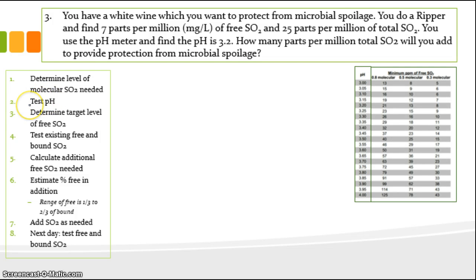First, step one, determine the level of molecular SO2 needed. So we want to protect from microbial spoilage, but it doesn't tell us if we want to protect from yeast or bacteria. So you have to make an assumption. So you're either going to take a number from column two of our chart or column three of our chart, depending on whether you want protection against yeast, which would be this column, the 0.8 molecular, or bacteria, which is this column, the 0.5 molecular. So let's just assume we want bacterial protection. That'll be consistent with our earlier problem, our problem one, and let's say we want 0.5 parts per million molecular SO2. That's number one. Next, we test pH. Well, that's given in the problem 3.2. So we're good to go.